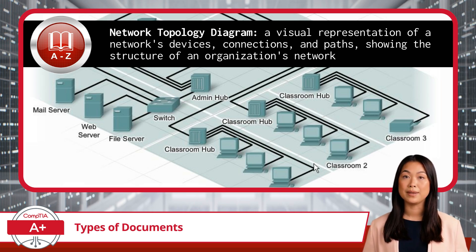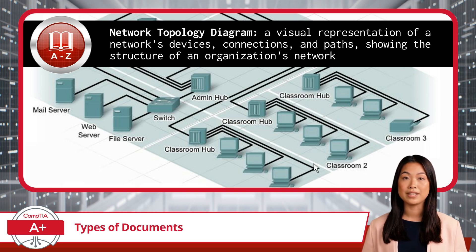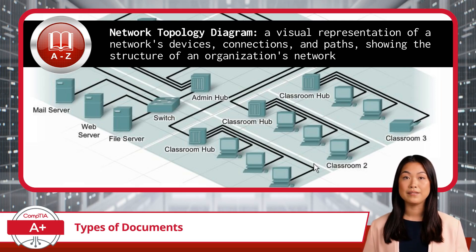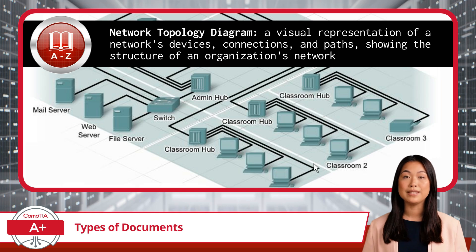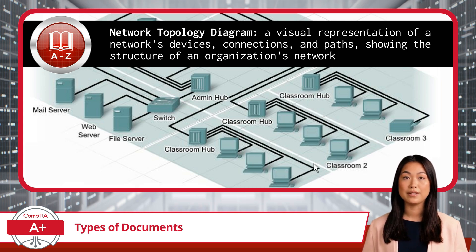Network Topology Diagrams play a crucial role in troubleshooting, planning, and securing network infrastructure. When IT teams need to troubleshoot issues, a well-maintained network diagram helps them quickly identify where potential problems might lie. For example, if a specific department is experiencing connectivity issues, the topology diagram can reveal the path data packets take from the affected devices to the network's core, making it easier to pinpoint where things might be going wrong. For that reason, any time the network changes — like adding a new switch, moving a server, or removing an old device — those changes should be promptly updated in the Network Topology Diagram.